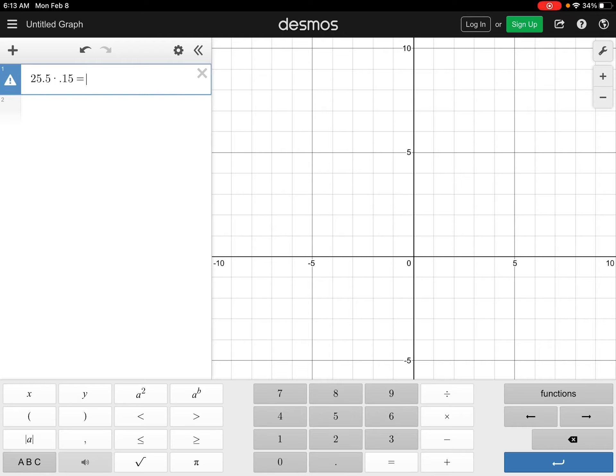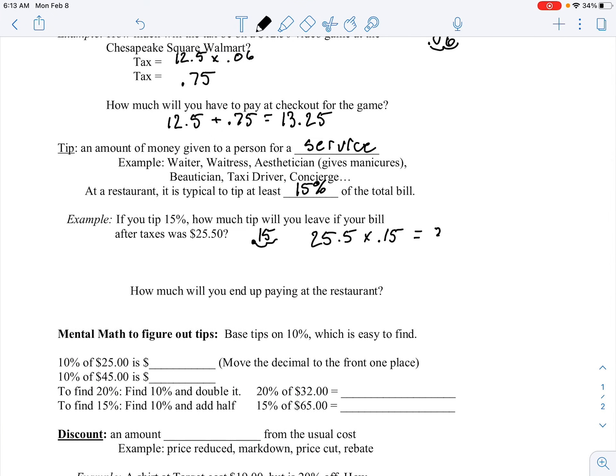And that is going to give us $3.82 and a half. Let's round that up to $3.83. So a 15% tip on a $25.50 bill will be about $3.83. And to figure out the total we pay, we just add that to our original amount. And it looks like here we get $29.33.